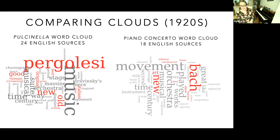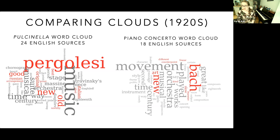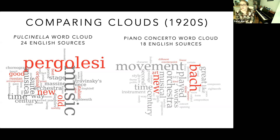This next slide compares a subset of reviews for very early 1920s responses to Pulcinella and the piano concerto. Each cloud contains a referent composer quite prominently — Pergolesi for Pulcinella and Bach for the piano concerto. There's some interesting emphasis on old versus new in the Pulcinella cloud. But there are also obvious and well-documented issues with word clouds: they provide content out of context. I don't know whether any of these words are preceded by the word 'not' — it could be that all of this is 'not good.' So this wasn't a very good way for me to figure out what was going on.